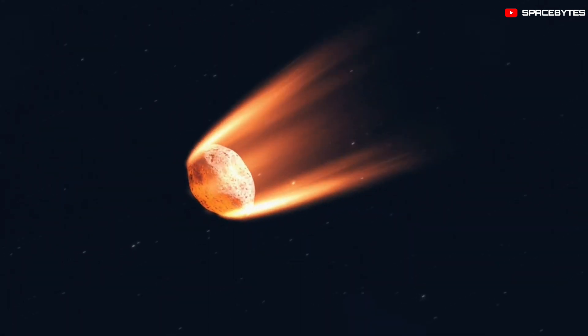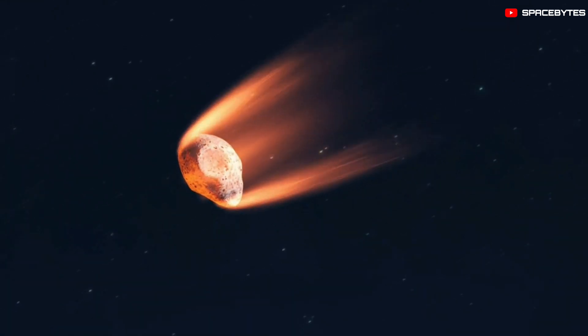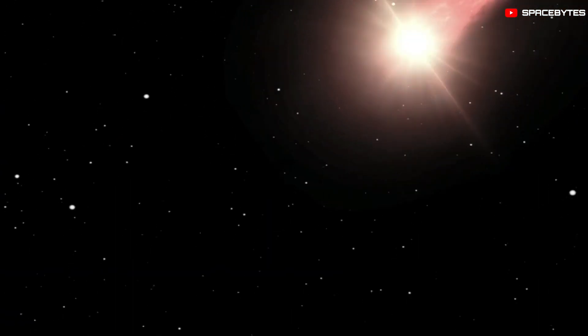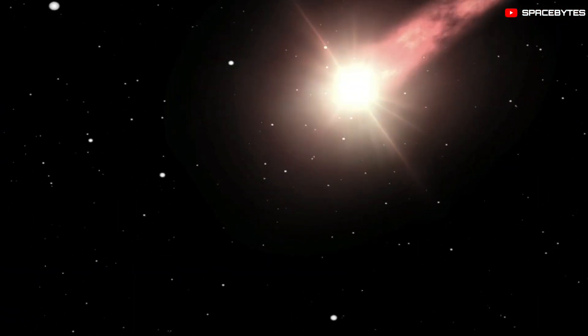It appears that comet C-2017 K2 is currently in a permanent coma and its tail is quite active. It is possible that this comet is still active and generating gas and dust, which could explain its strange appearance.